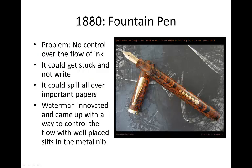In the late 1800s, someone named Waterman came up with an even better invention. The problem with nib pens was that you had to dip your pen into the ink every few seconds, and it was very hard to control the flow of ink — you might get drips, or thick or thin lines. Waterman came up with a way to control the ink flow across the metal nib using innovative slits in the nib.